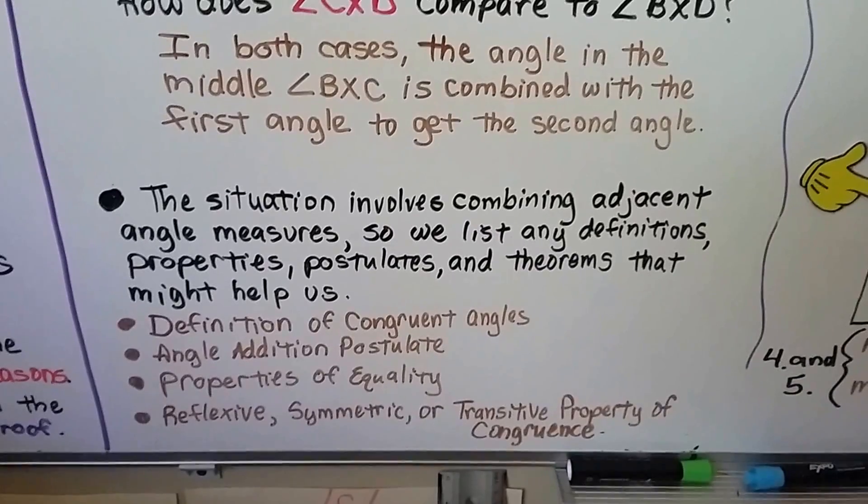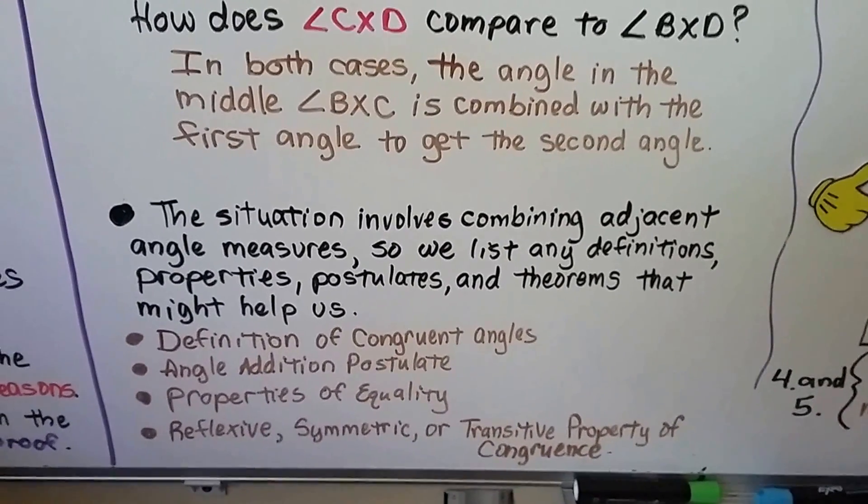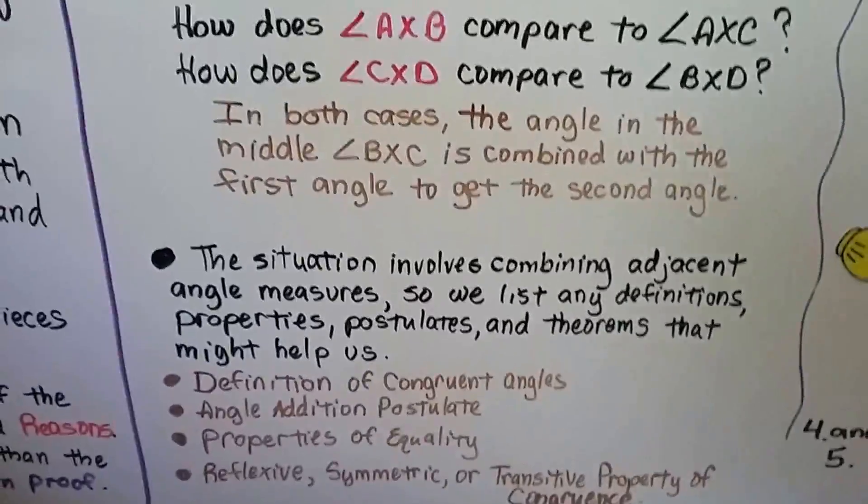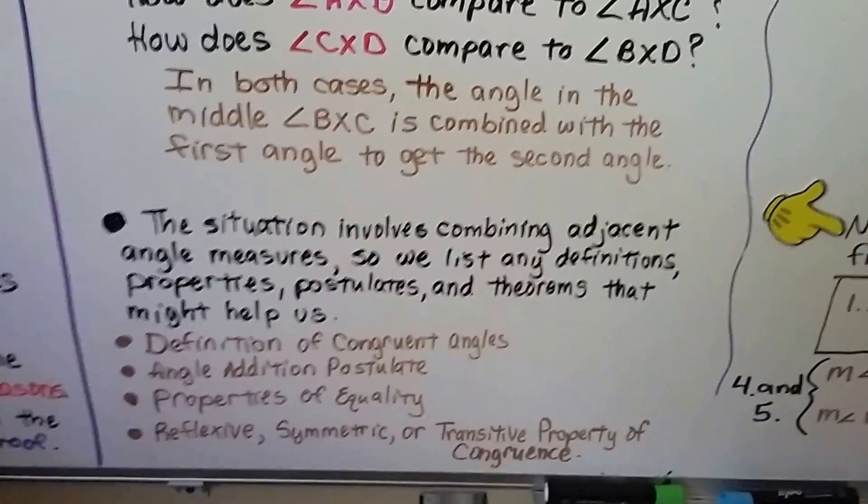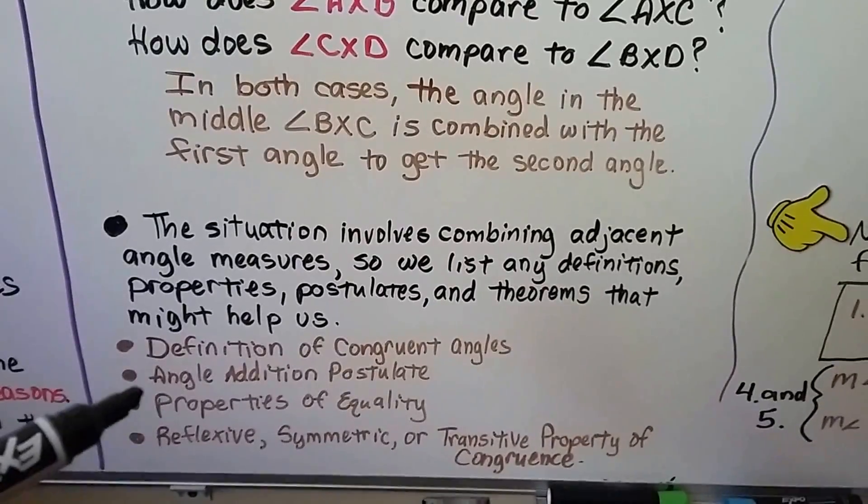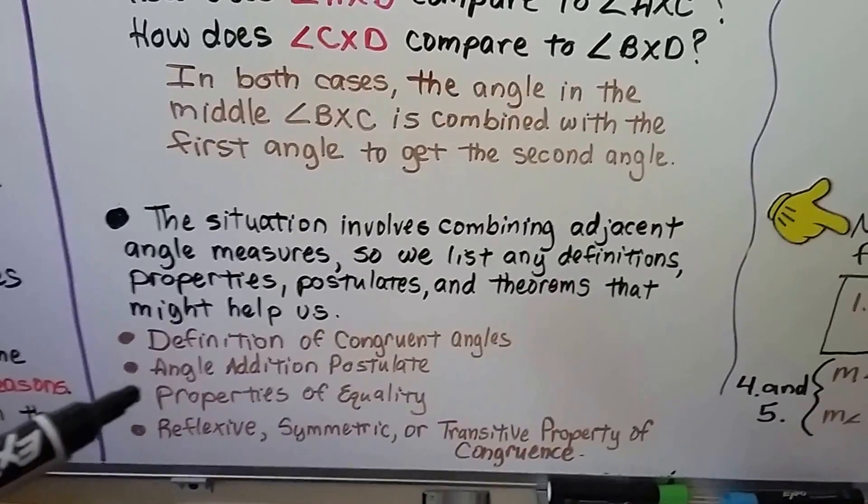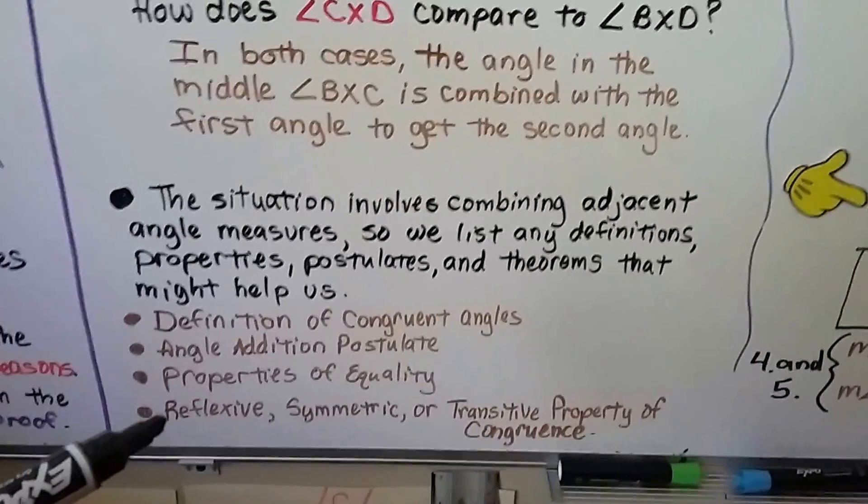So we list any definitions, properties, postulates, and theorems that might help us. The definition of congruent angles can help us. The angle addition postulate can help us. We're adding angles, aren't we? And the properties of equality, like the addition property, can help us. And the reflexive, symmetric, or transitive property of congruence can help us.